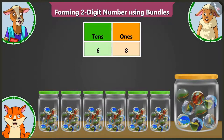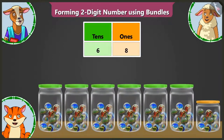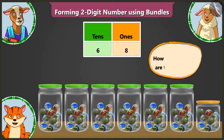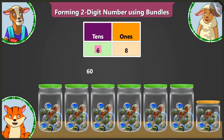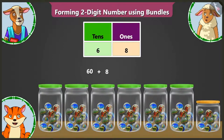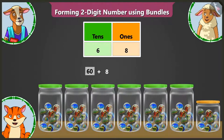Well done, Lily. But my question was, how many marbles are there in total? Here, in the tens box, there is six, which means sixty marbles. And in the ones box, there is eight, meaning there are eight marbles. That is why there are sixty and eight — sixty-eight marbles in total.